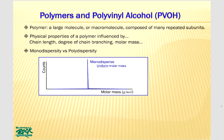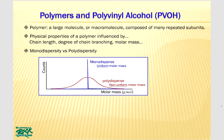A monodispersed polymer is one that has a single molar mass. A counts versus molar mass plot for a monodispersed polymer exhibits a very sharp peak, almost a single vertical line at its molar mass, implying uniform molar mass. On the contrary, a polydispersed polymer is one that has a wide distribution of molar masses and has non-uniform molar masses.